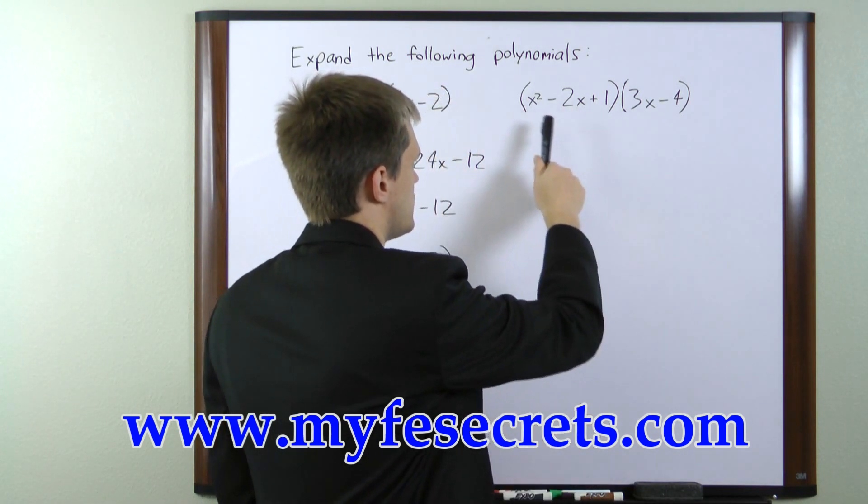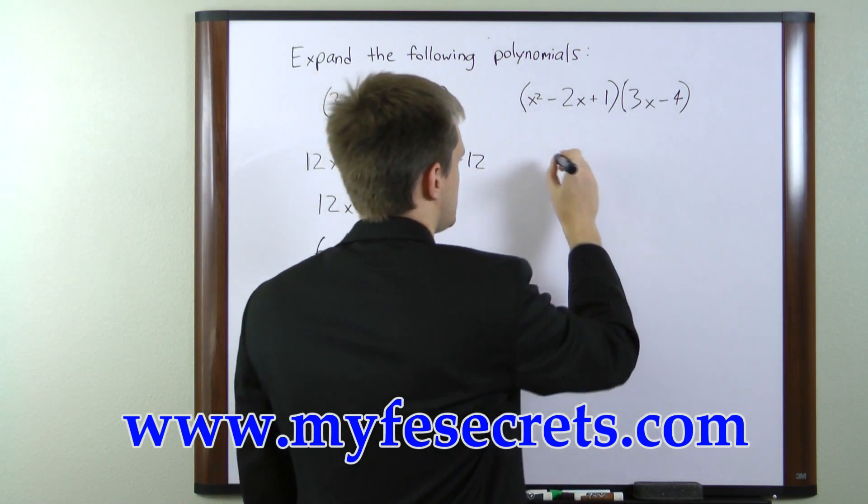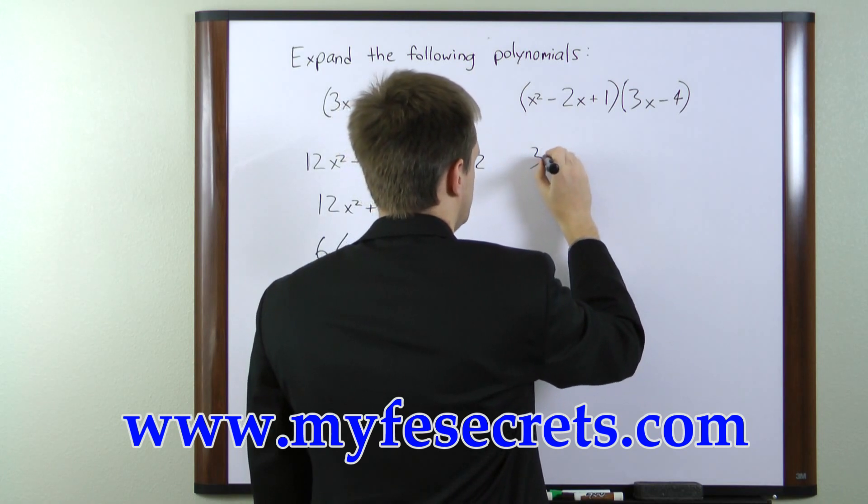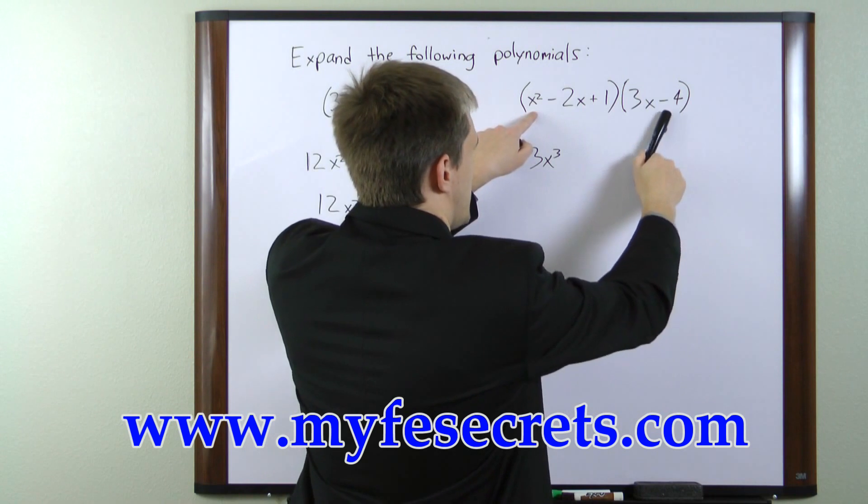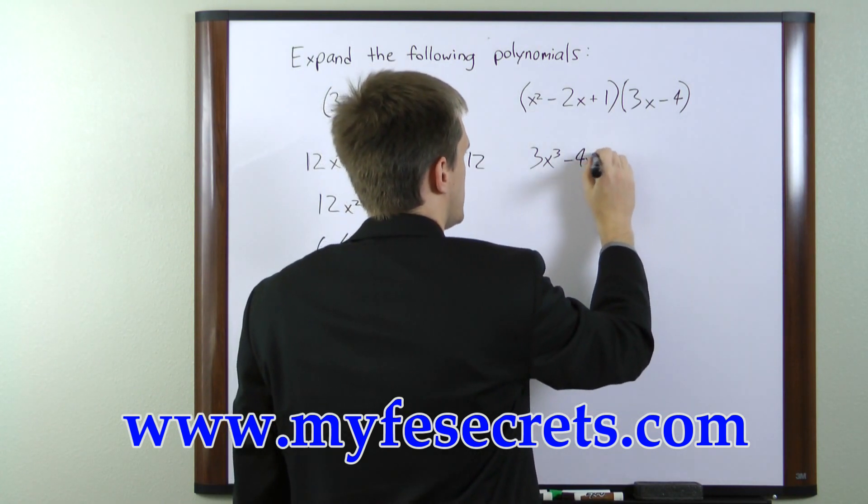So the first in order is going to be x squared times 3x, so that gives us 3x cubed. x squared times negative 4 gives us negative 4x squared.